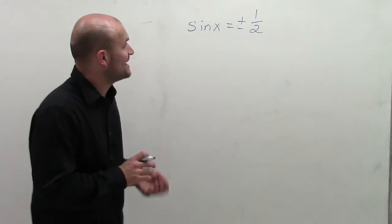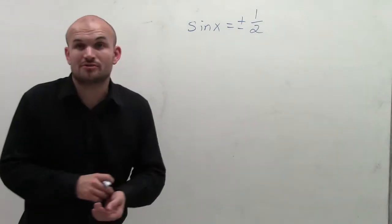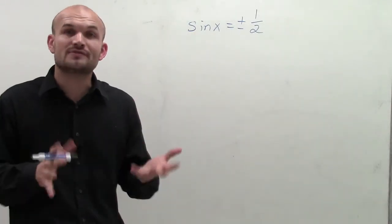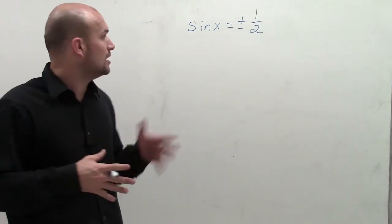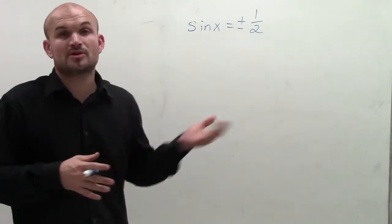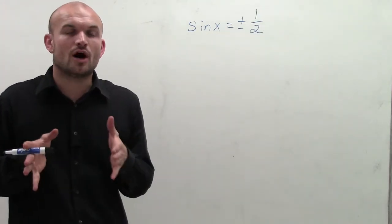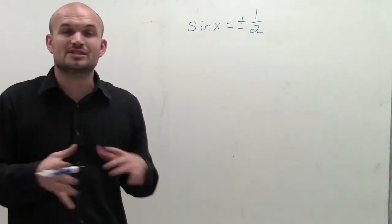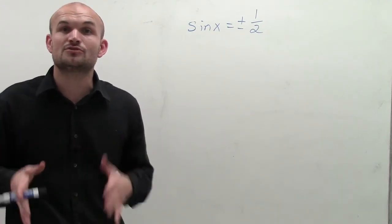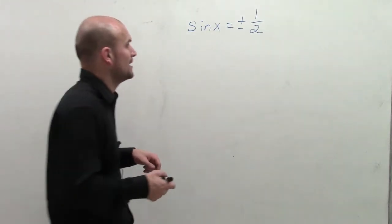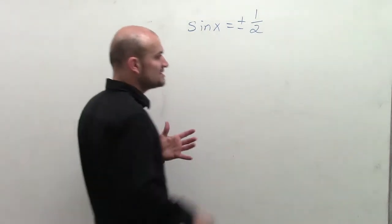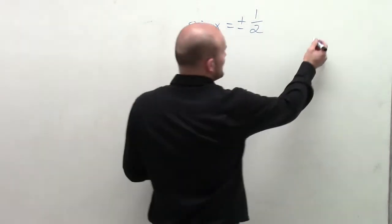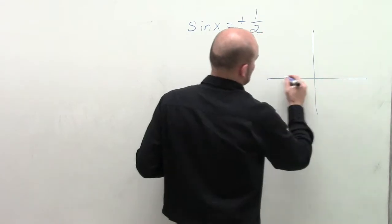Welcome. Here we have sine of x equals plus or minus 1/2. What I want to do is show you how to find all of the solutions for sine equals plus or minus 1/2 and understand how to represent all of the solutions — not just on the interval 0 to 2π, but the first thing we always do is find the solutions on 0 to 2π, using the unit circle.